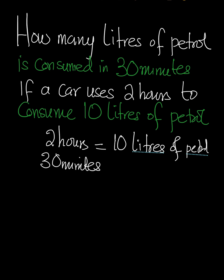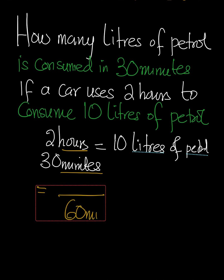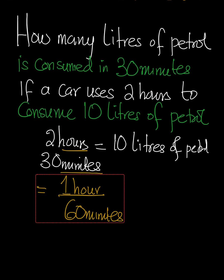Now, the issue here, as we can see, is that we have something in minutes and we have something in hours. So first of all, let's see how we can convert the minutes into hours so that the units are the same. We always know that in every 60 minutes, we have one hour.